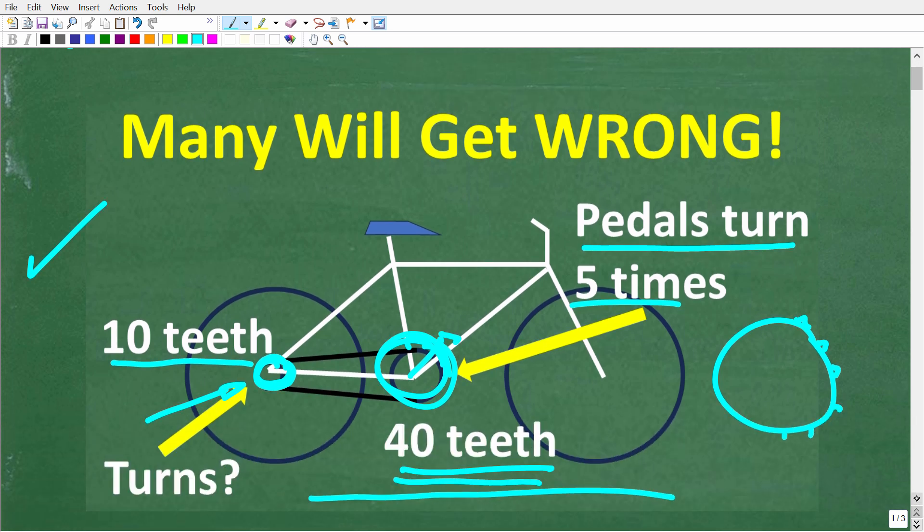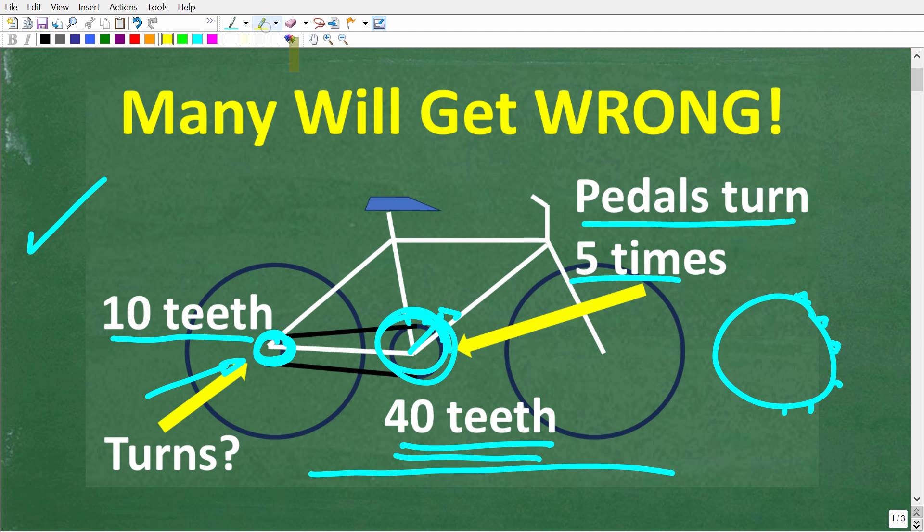So one more time, we have this bike. And of course, we have two sets of gears. We have the big gear here and the small gear. And then, of course, we have the chain that connects the two. So, this pedal here, we're going to basically pedal this big gear five times. So, this thing is going to rotate five complete times right here.